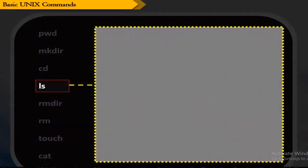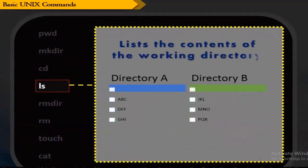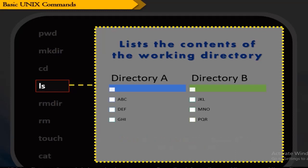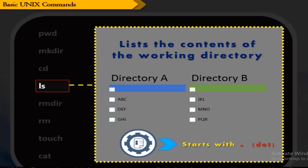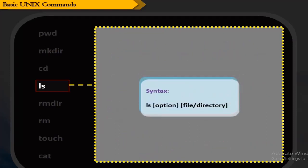The ls command lists the contents of the current working directory, or the files in the directory that match the name given as a command line argument. ls without any option lists only the files which are not hidden. Hidden files usually contain important program configuration information, and the names of these files start with a dot. The syntax is shown here.